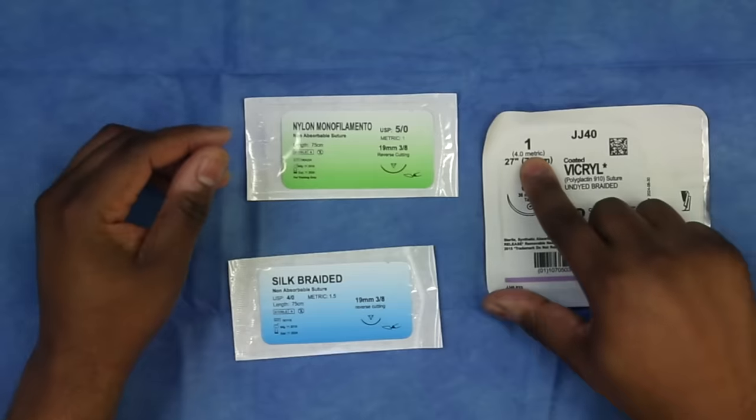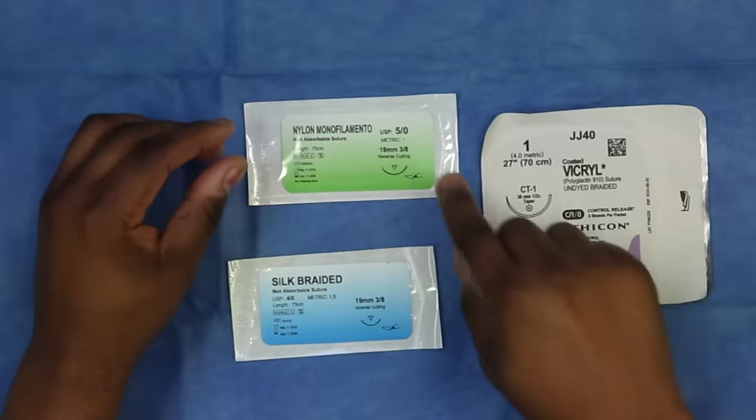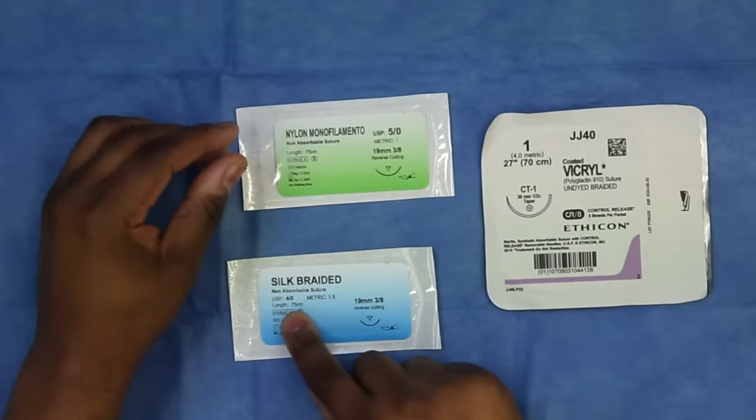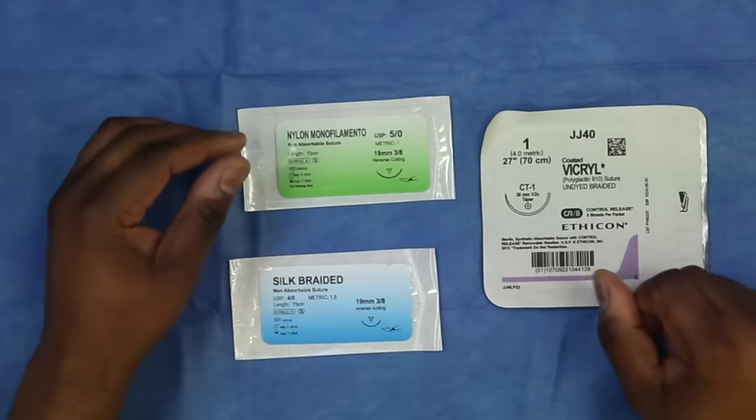If we talk about the sizes of sutures, it's conversely related to the number. So a 7-0 suture or an 8-0 suture is actually a very small suture. And a 1-0 or a 2-0 or a 3-0, these are fairly large sutures. So this is a number 1, it's a fairly large suture. We use this to close the fascia or any deep layers of the skin. And this is a 5-0 as well as a 4-0. So these are smaller sutures than this 1-0 vicryl here.